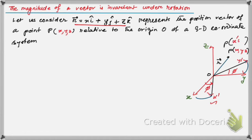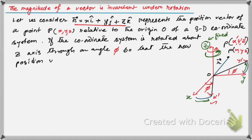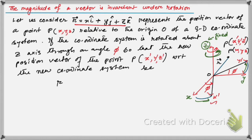If the coordinate system is rotated about the z-axis through an angle phi, keeping z fixed, then x and y axes are displaced only. Z is fixed. The new position vector of the point, with coordinates x-prime, y-prime, z-prime, with respect to the new coordinate system, becomes r-prime vector: x-prime i-cap + y-prime j-cap + z-prime k-cap.